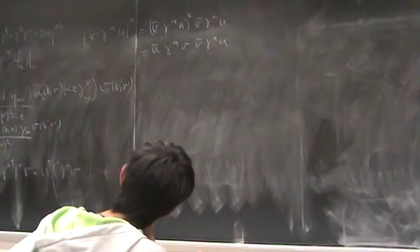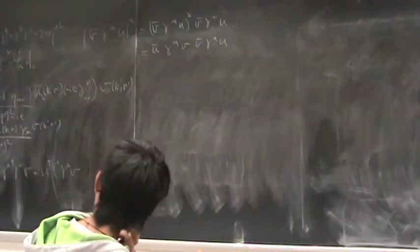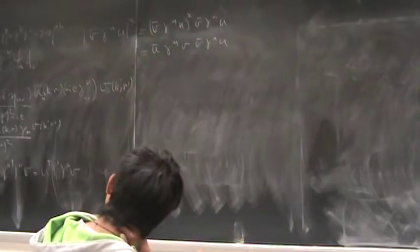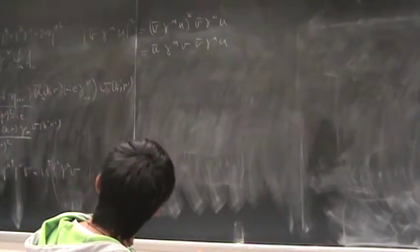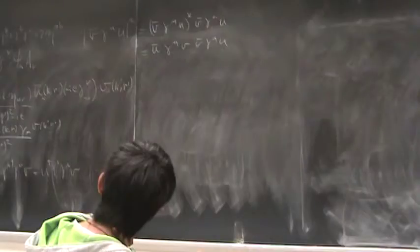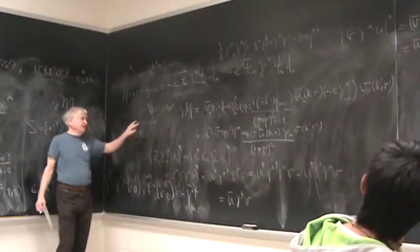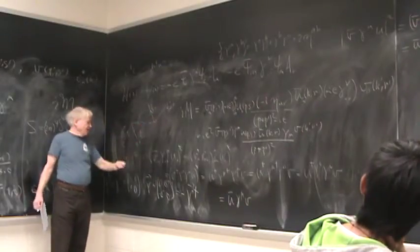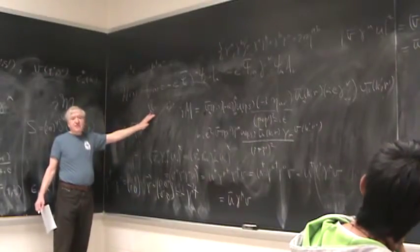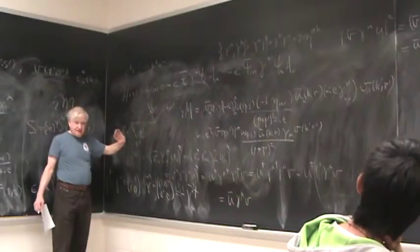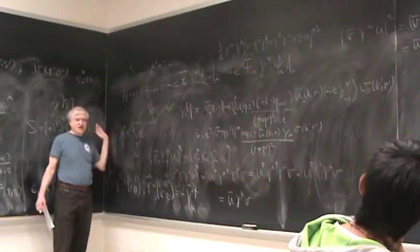And so this is v̄ γ^μ u complex conjugation, v̄ γ^μ u. And we just saw that was ū γ^μ v, v̄ γ^μ u. Now you see this is a very nice structure here, because vv̄ is the thing that if you sum over the two spin states you get a nice p̸ - m, or in this case p'̸ - m.